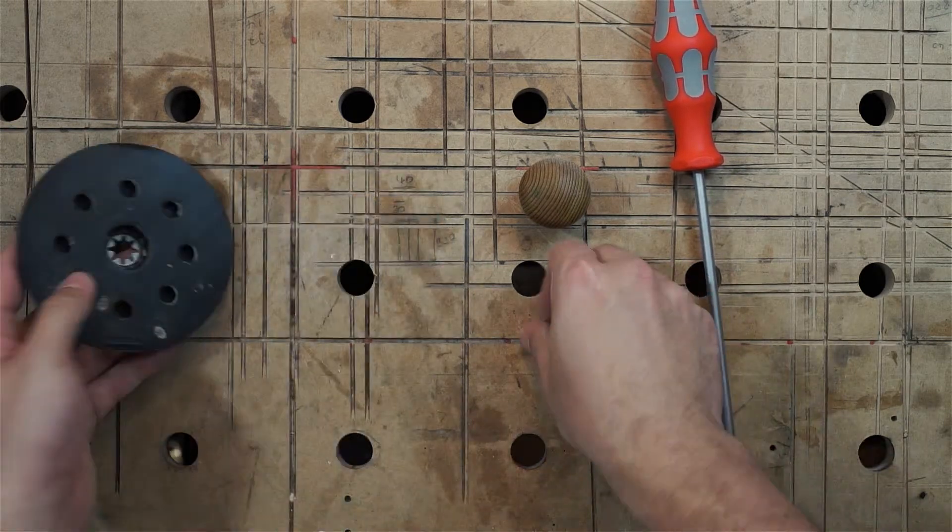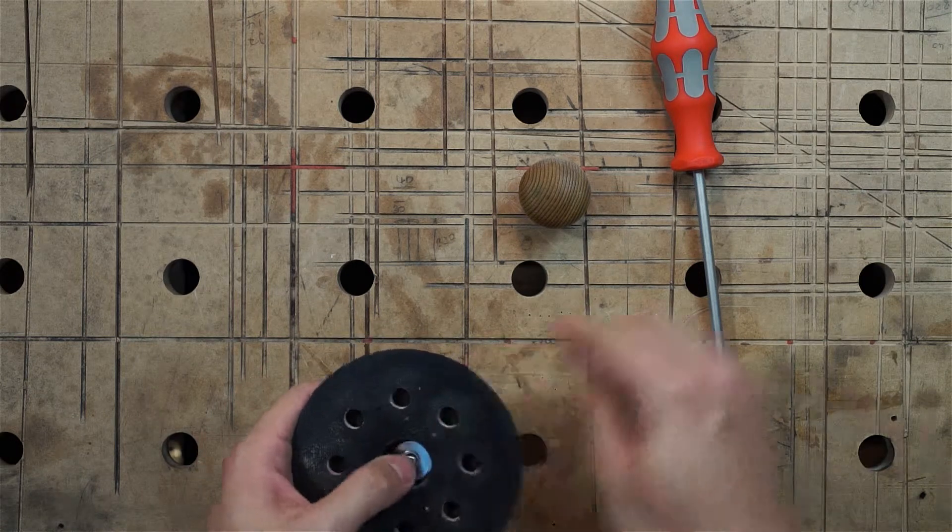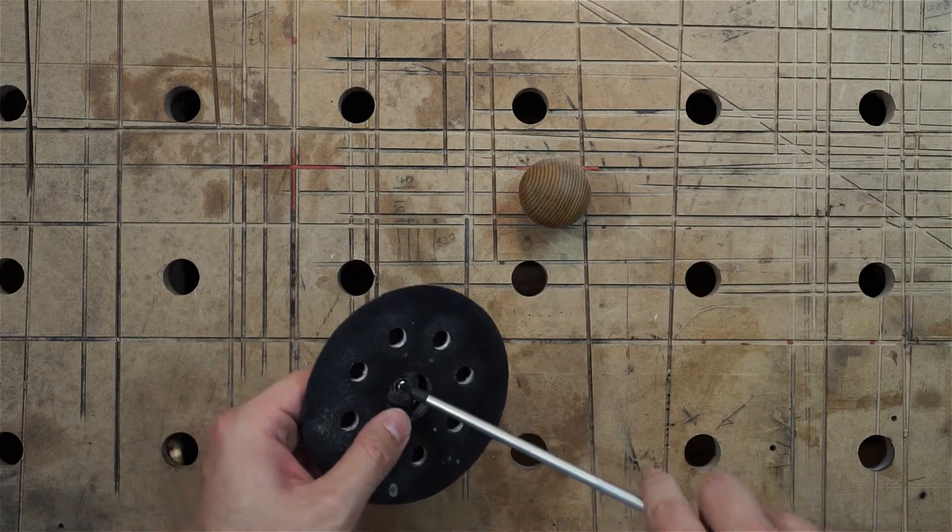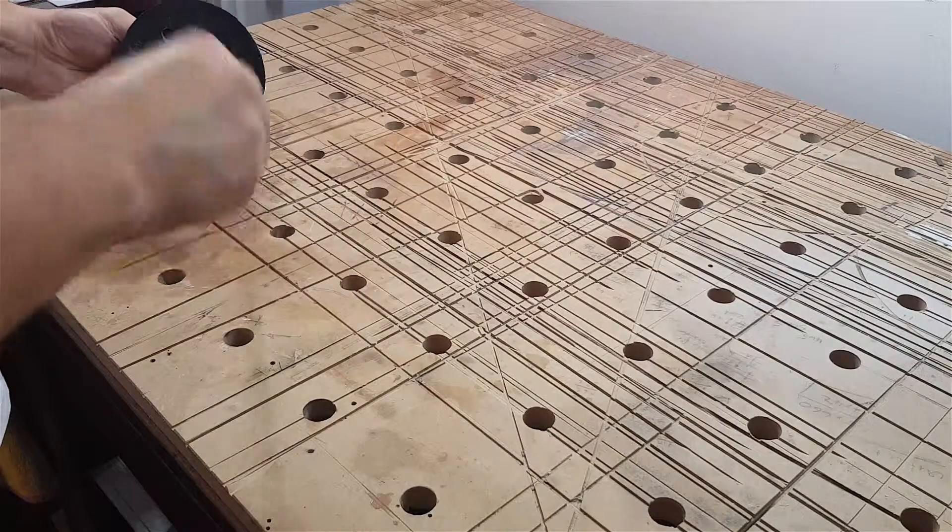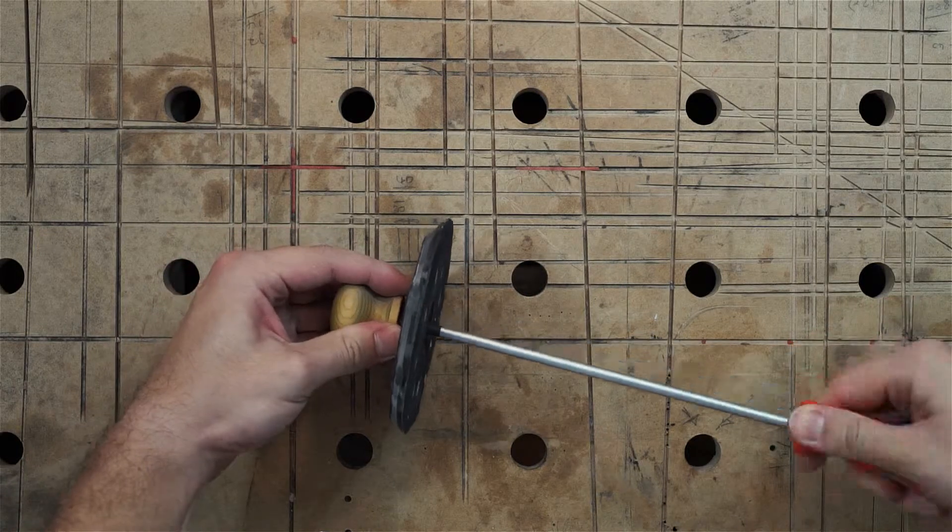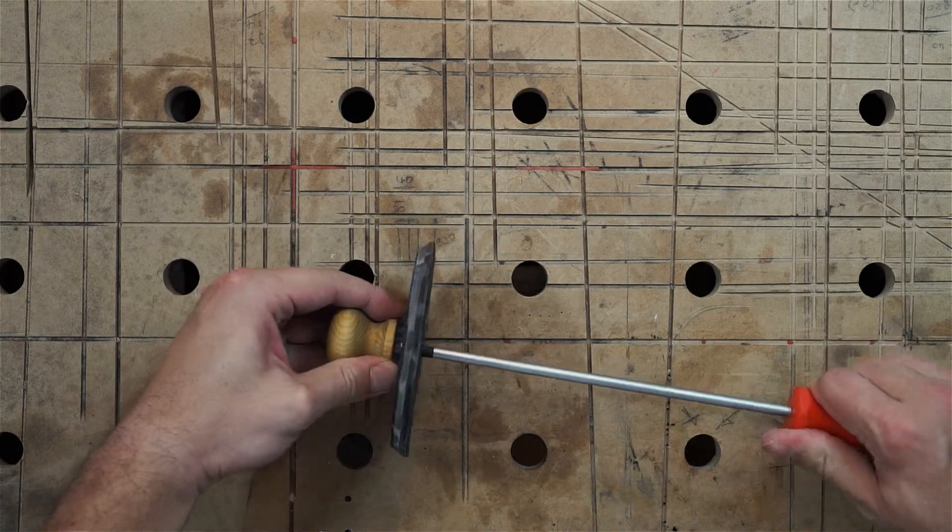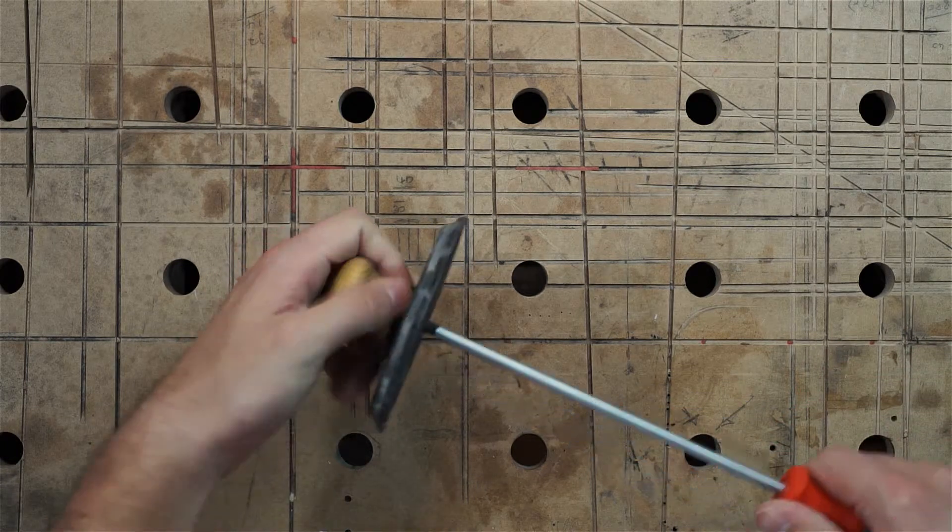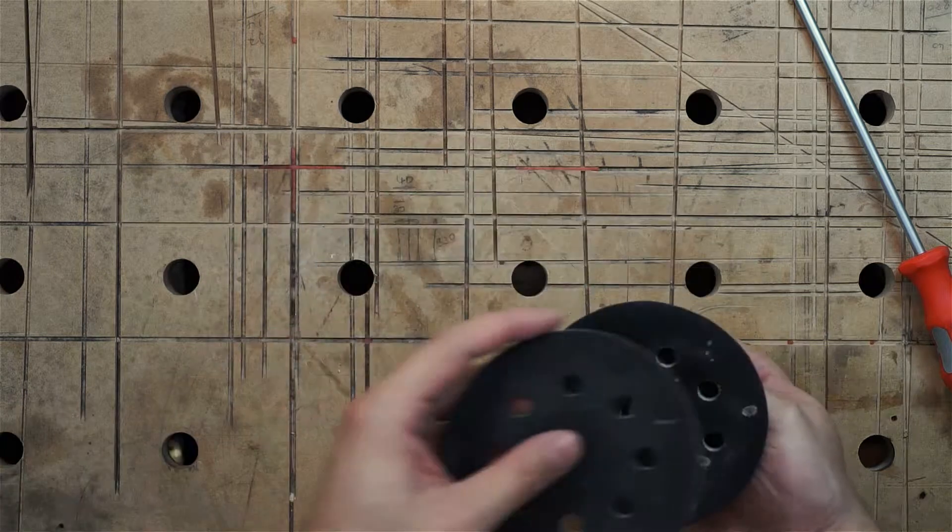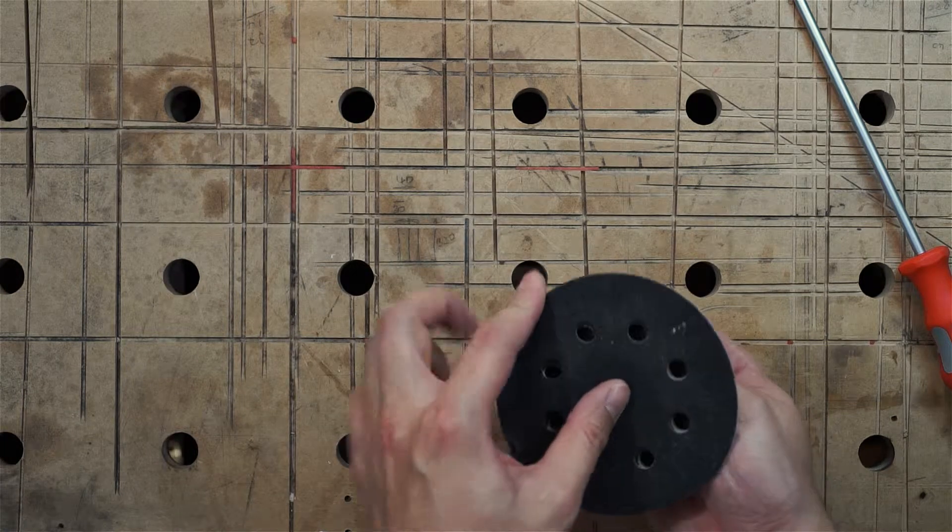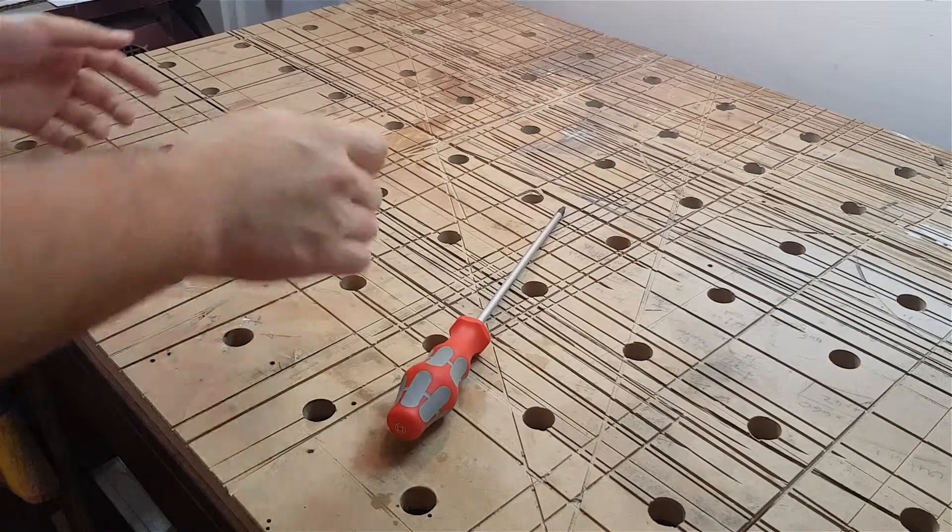You just put the washer inside with the screw and tighten it. Before you tighten it, make sure the handle is centered onto the plate, then tighten it. Afterwards, you can put on your sandpaper and your sanding disc is done. Great!